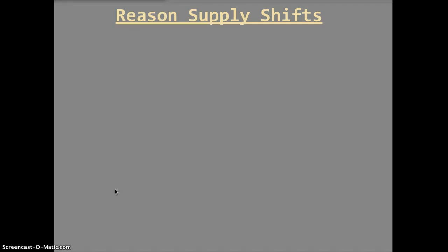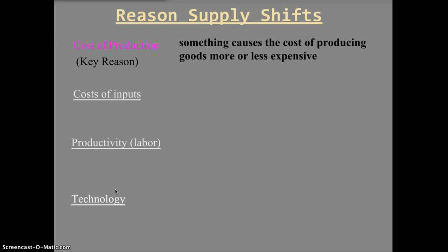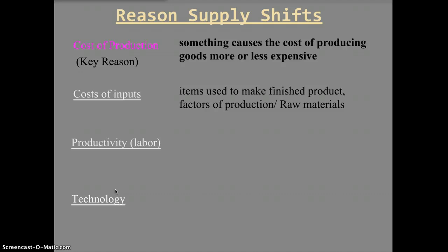There are several reasons for supply shifts. The main overriding reason is the cost of production — something causes the cost of producing a product to either increase or decrease. Sub-reasons include the cost of inputs: workers' wages, raw materials, capital, or leasing a factory. Any change in input costs affects overall production costs regardless of how many units are being produced.